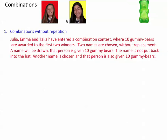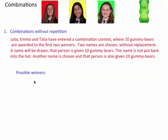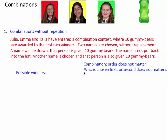So here we have Emma, Talia, and Julia. The possible winners — the trick to this is you want to think of it at first as a permutation. We pretend that there's a difference between first and second place. But remember in combinations, order does not matter. Who was chosen first or second does not matter. So if we choose Emma first, can we then choose Emma second? No, because she's out of the list.